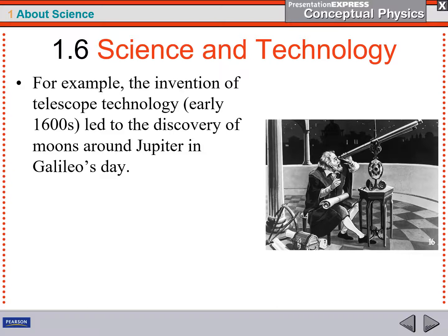For example, back in the 1600s, lenses were improved and the telescope was invented. And the invention of that technology led Galileo to discover moons around Jupiter. And that was the first time that moons had been discovered around another planet. So a great scientific discovery.